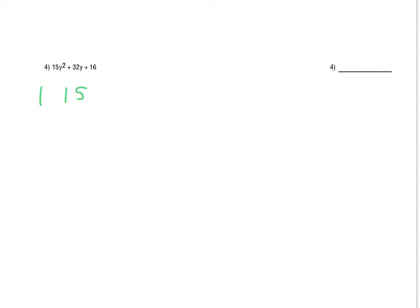With number 4, we're looking at a question where it's not just a plain y squared — we have a 15y squared. We'd also want to consider a common factor, but in this case there is not one we can take out. There are a couple of different ways to look at this. It could be a 1 and a 15 or a 3 and a 5 for the y's, and it could be a 1 and 16, a 2 and an 8, or a 4 and a 4 for the plain numbers. We will get the 15y squared and the 16 — the question is how do we get the 32y?